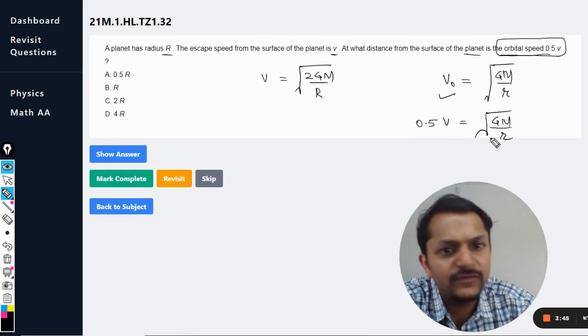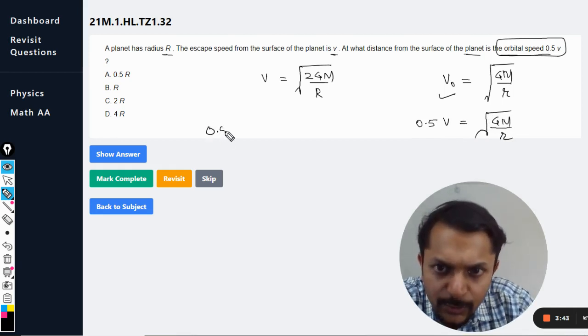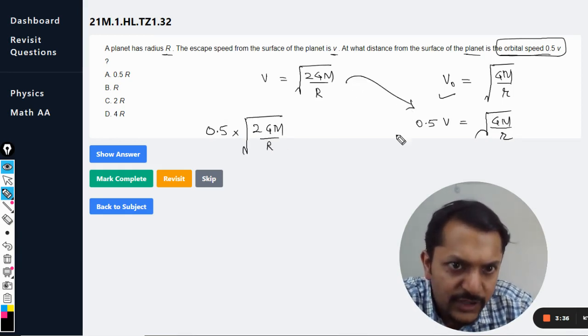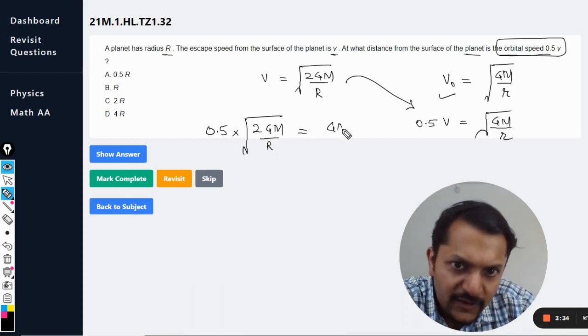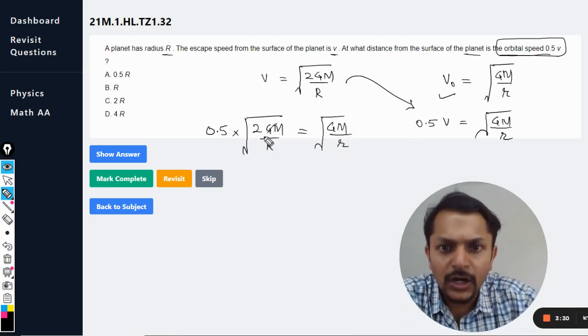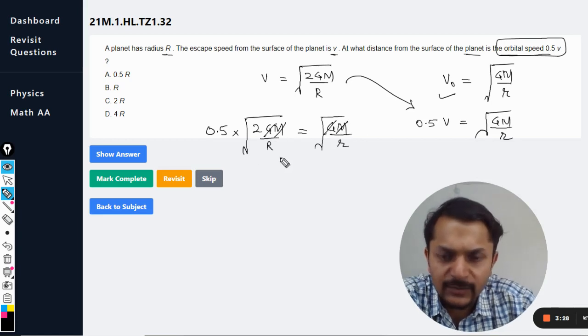From this equation we are going to find this. So 0.5 into 2GM divided by capital R, I substitute this value here. This will be equal to GM divided by r. Fine, so now root of GM has been cancelled out.